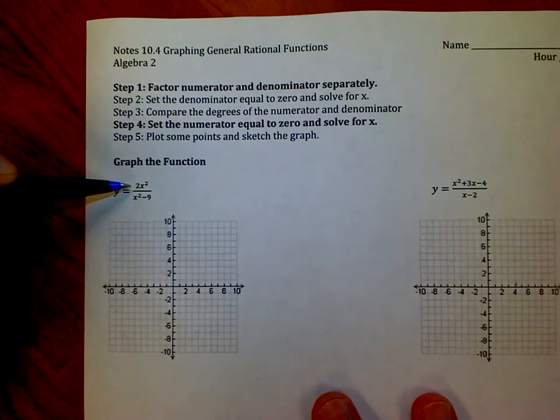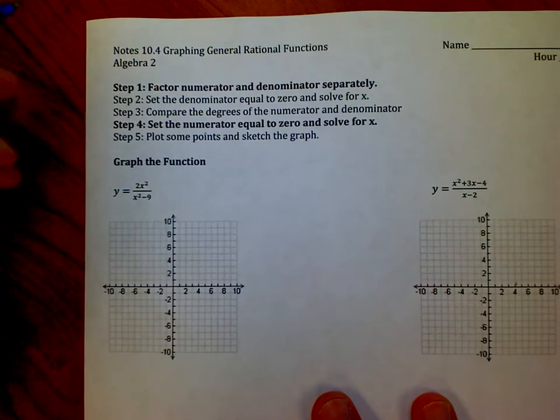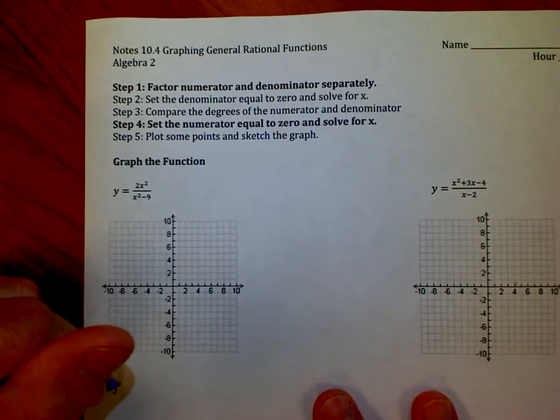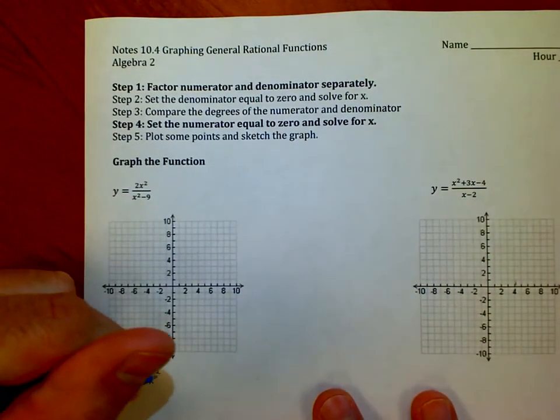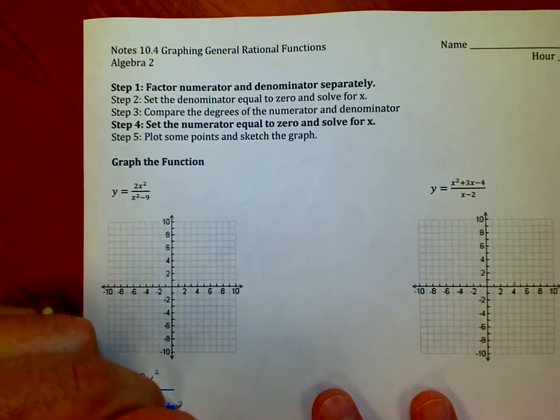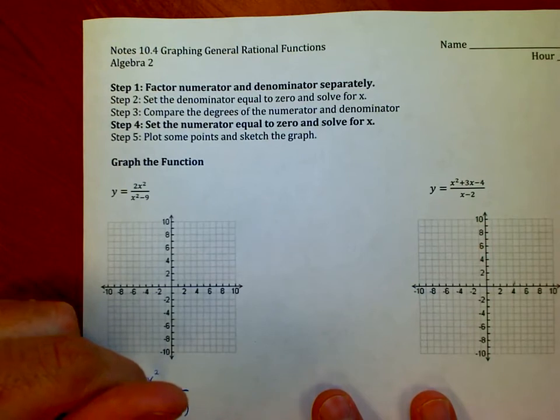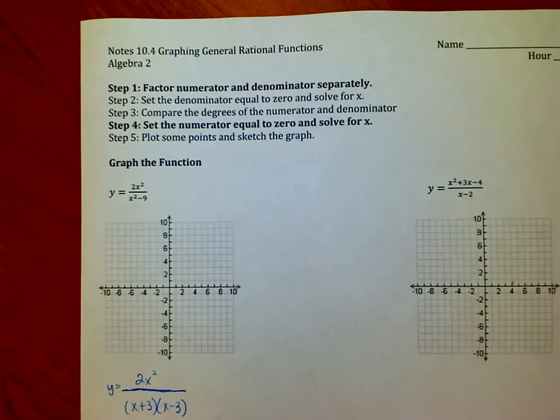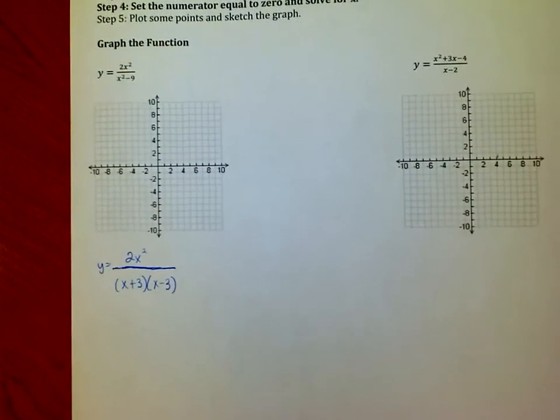The top is just one term, you're not going to be able to do anything there. But the bottom does factor out, and that's (x+3)(x-3). So the first thing is just to rewrite as 2x² over (x+3)(x-3). If you need help with factoring, that's too much for one video. You need to go look up one of the videos on factoring.